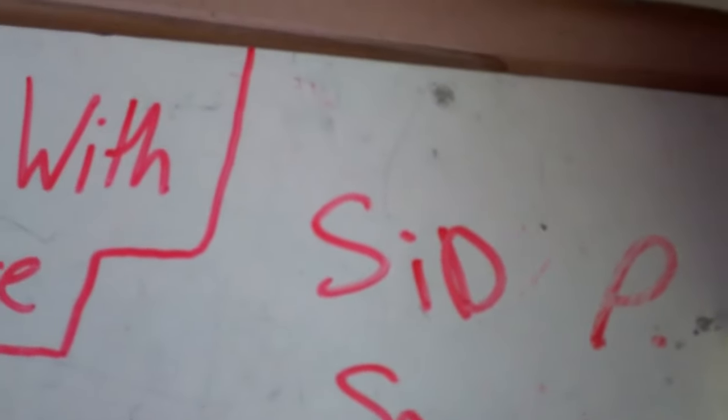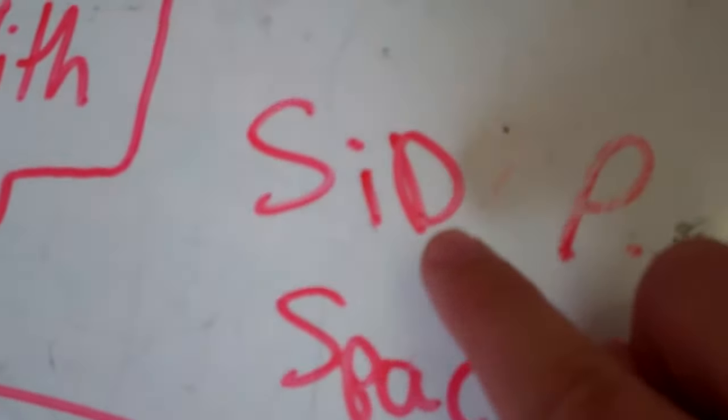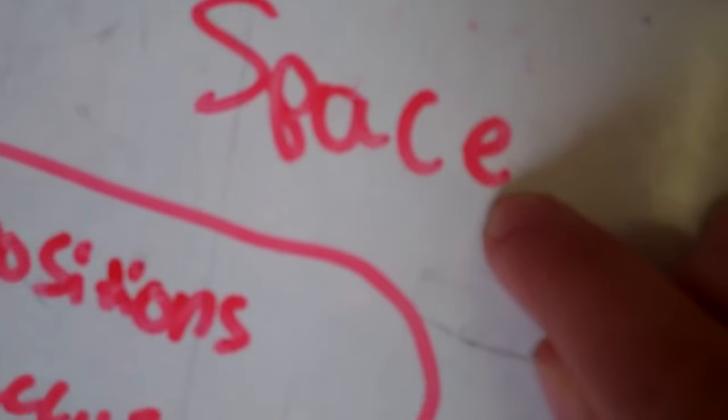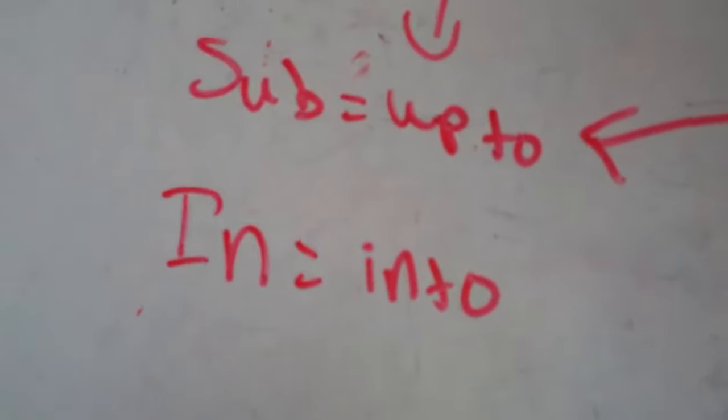Let's review. SID P SPACE is for the Latin prepositions with the ablative case. Sine, which means without. In, can be in or on. De, about, concerning, or down from. Pro is for - you can remember that by protagonist, it's for the good. Sub means under, like submarine is under the water. Prae, in front of. Ab or a means away from, depending on if there is a vowel - you have to add the consonant in there. Cum with, ex or e means out from, and it's the same thing. And sub, up to, in, into, also take the accusative.